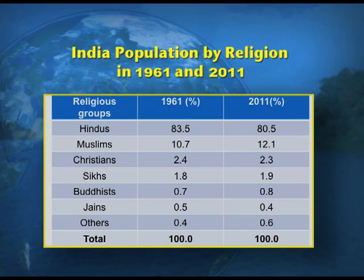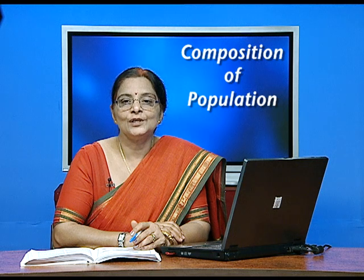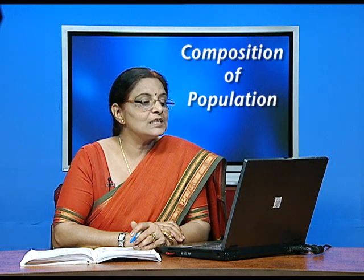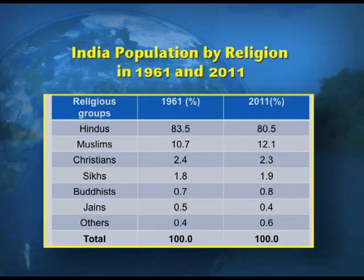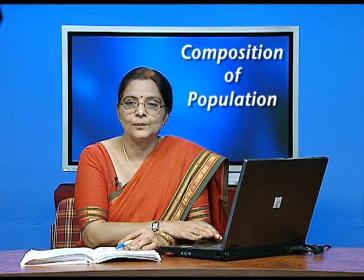According to the 1961 census, Hindus constituted 83.5% of the population, which has declined to 80.5% by 2011. The Muslim population was 10.7% in 1961 and has risen to 12.1% in 2011. Other groups include Christians 2.3%, Sikhs 1.9%, Buddhists 0.8%, Jains 0.4%, and others 0.6% of the total population of India.